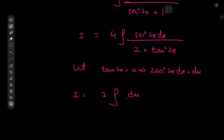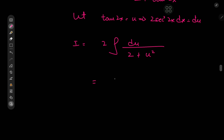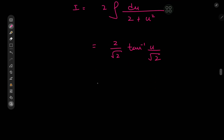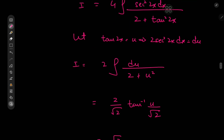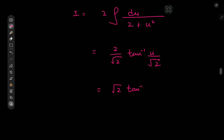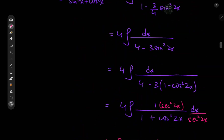That gives us 2 divided by √2 times arctan(u/√2), and 2/√2 simplifies to just √2. Substituting back u = tan(2x), we get √2 times arctan(1/√2 · tan(2x)).